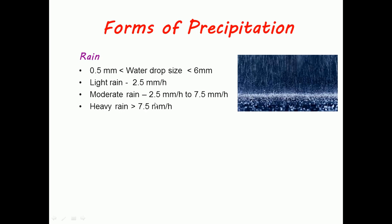For moderate rain, the intensity is 2.5 mm per hour to 7.5 mm per hour. For heavy rain, the intensity is greater than 7.5 mm per hour.